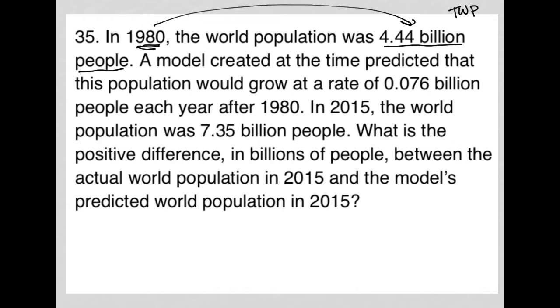The next sentence says a model created at the time predicted that this population would grow at a rate of 0.076 billion people each year after 1980. Grow 0.076 billion each year. In 2015, the world population was 7.35 billion people. So 2015, 7.35 billion people.